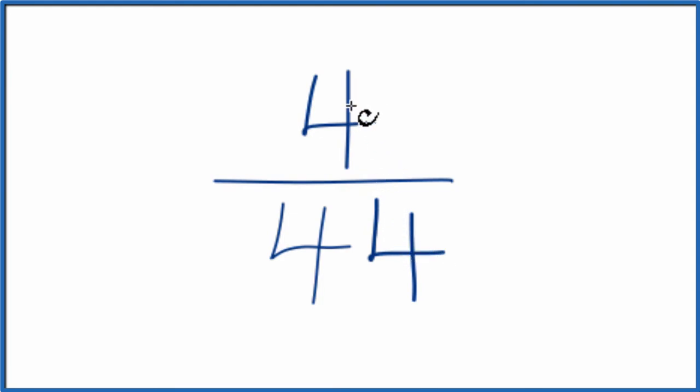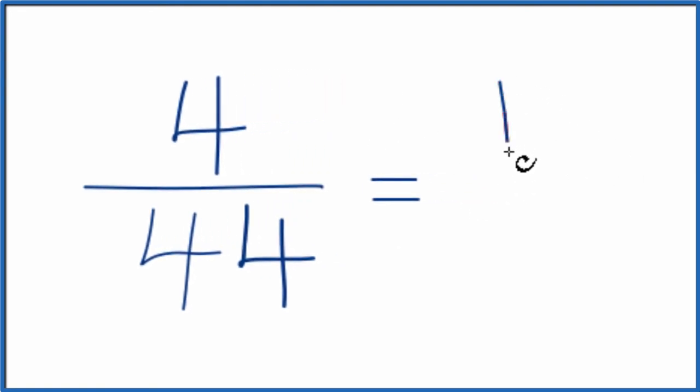You probably can see that 4 times 11 would give us 44. So if we divided 4 by 4, that would give us 1, and then if we divide 44 by 4, that gives us 11. 11 times 4 is 44.